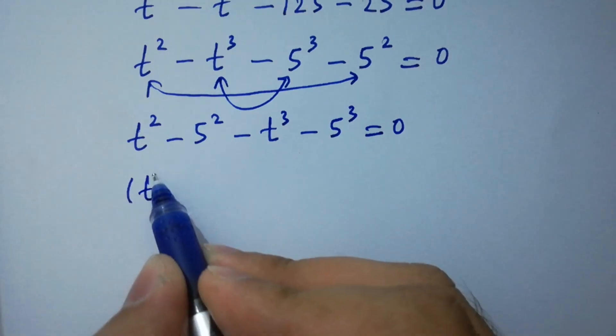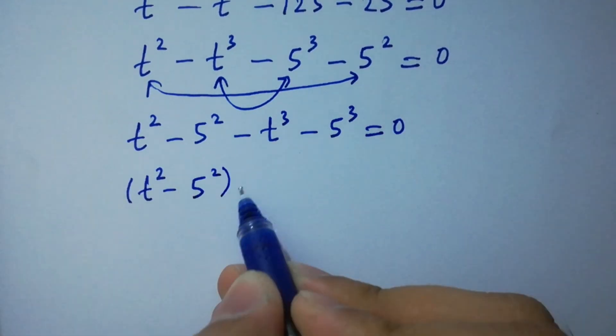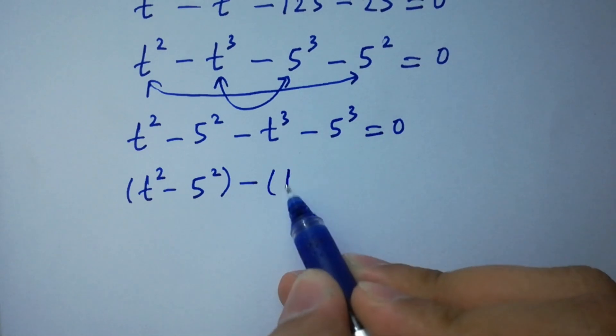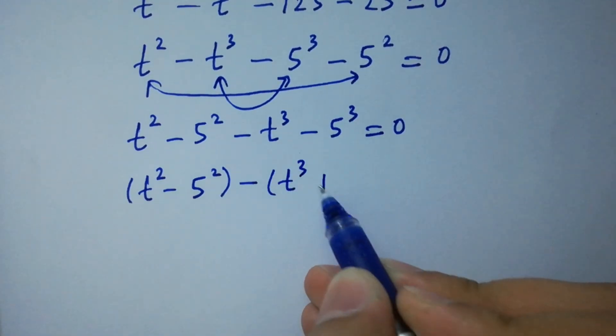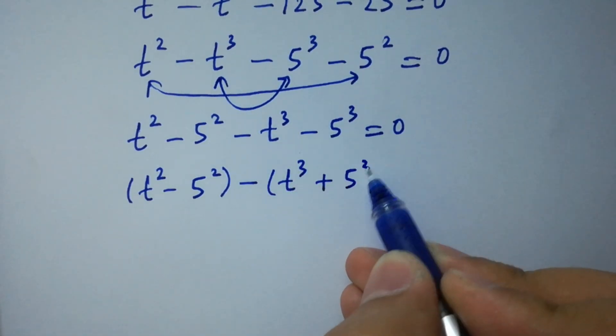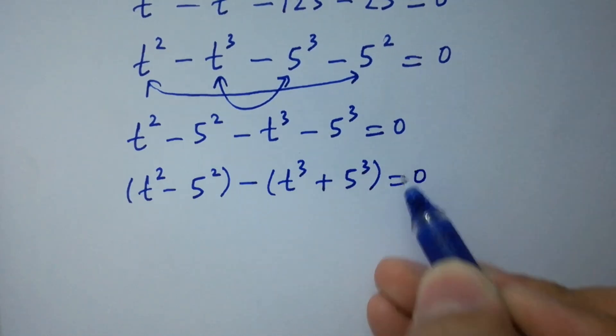We can write it as t squared minus 5 squared minus t cubed minus 5 cubed equals 0. Taking the bracket t squared minus 5 squared as common, we have minus (t cubed plus 5 cubed) equals 0.